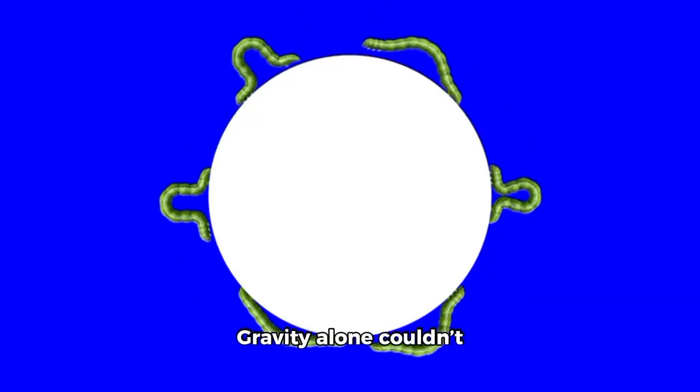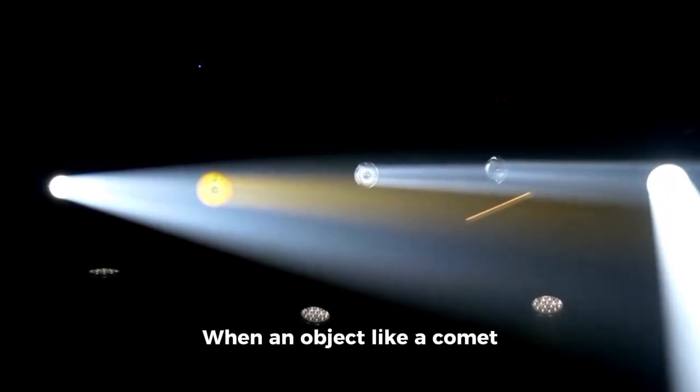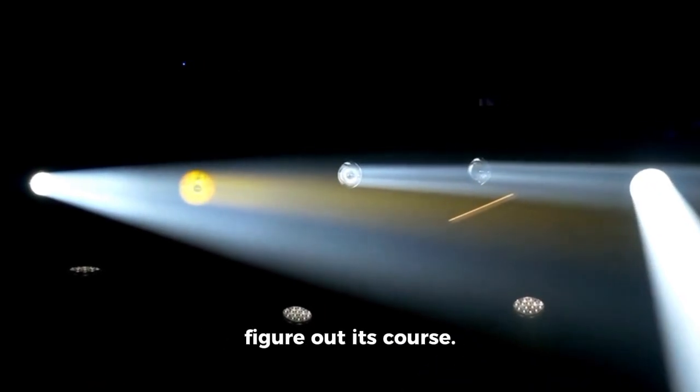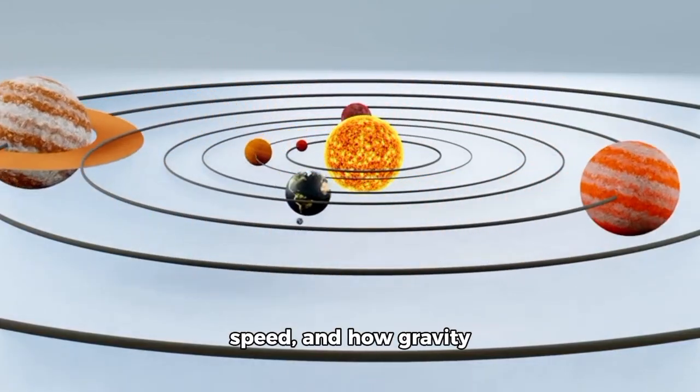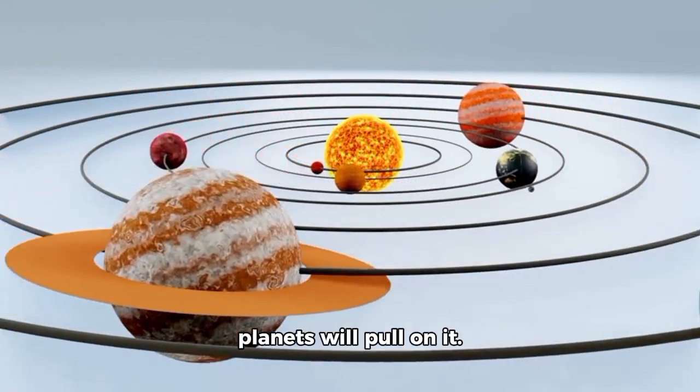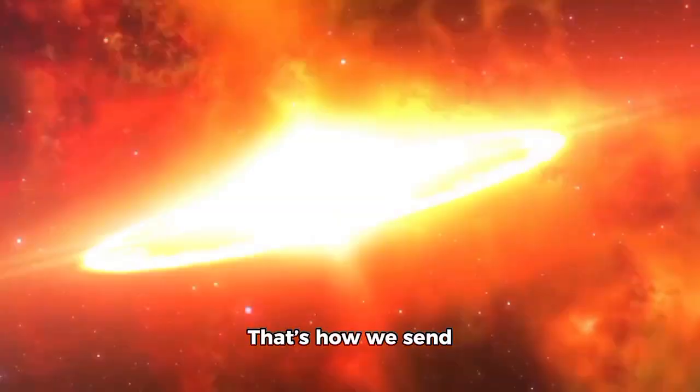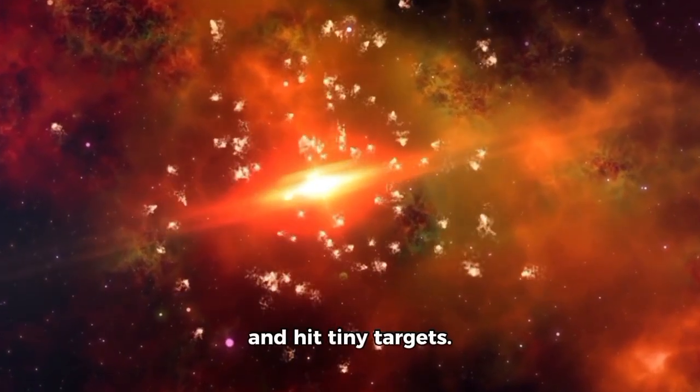Gravity alone couldn't explain it, and neither could sunlight or gas. When an object like a comet enters the solar system, scientists use math to figure out its course. They examine its mass, speed, and how gravity from the sun and nearby planets will pull on it. These calculations usually work very well. That's how we send spacecraft across billions of kilometers and hit tiny targets.